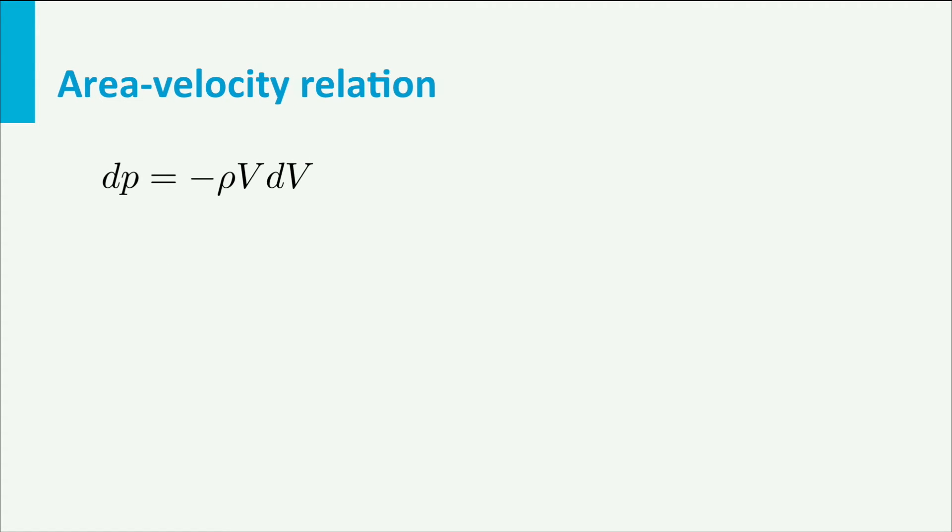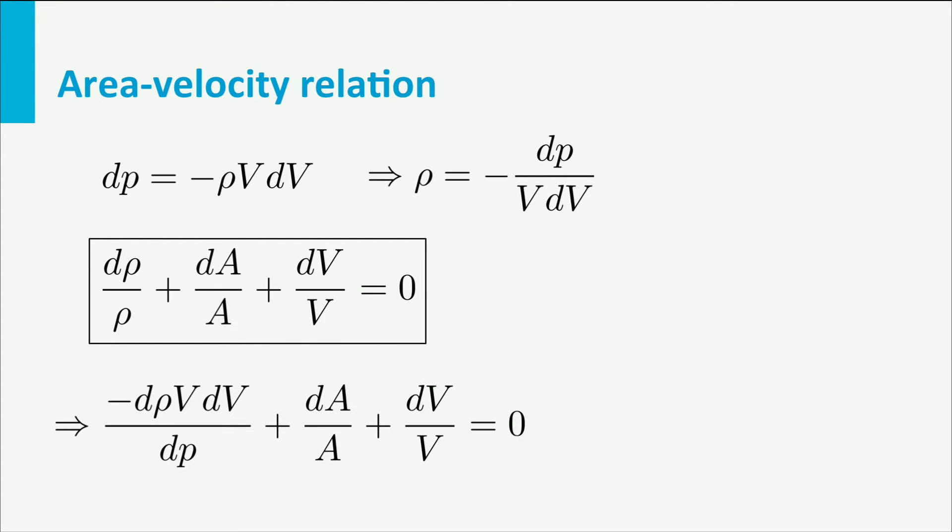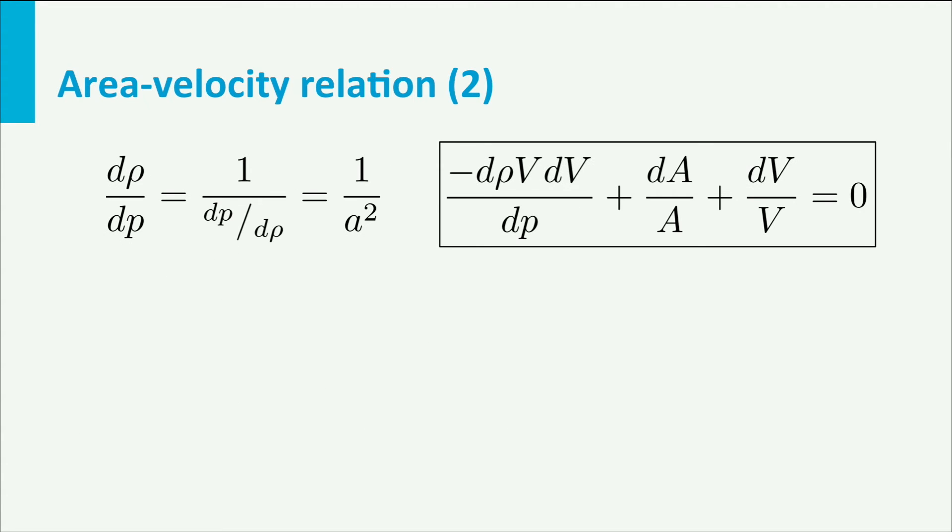Now we enter the Euler equation dP is minus rho VdV or rho is minus dP over VdV. If we insert this in the other equation we find minus dP VdV divided by dP plus dA over A plus dV over V equals zero. Now earlier we found that dP over d rho is equal to the speed of sound A squared. So we have minus VdV over A squared plus dA over A plus dV over V equals zero.